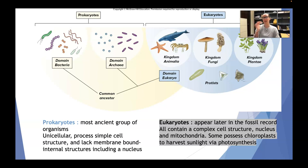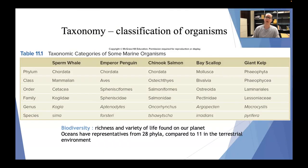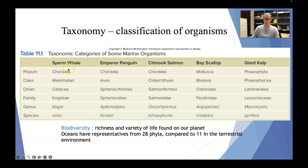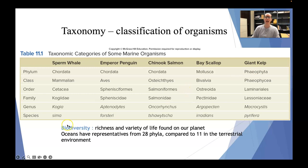We can further classify organisms using taxonomy. The categories include phylum, class, order, family, genus, and species. Here are five different marine organisms as examples: sperm whale, emperor penguin, chinook salmon, bay scallop, and giant kelp — we can't forget the plants in the ocean, they're really fascinating. We also have to recall that the ocean is an incredibly biodiverse space. Biodiversity refers to the richness and variety of life on our planet. The oceans have representatives from 28 different phyla compared to only 11 in the terrestrial environment.